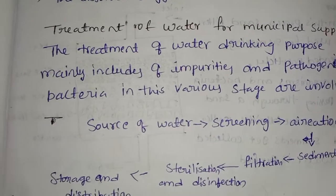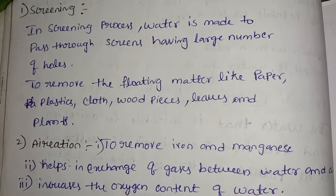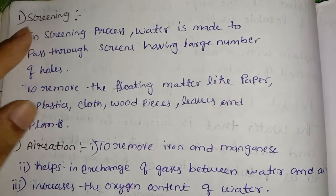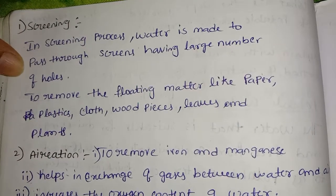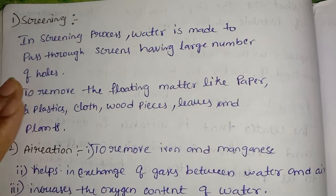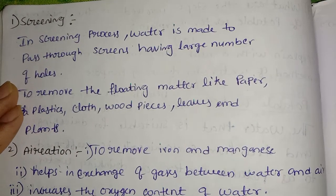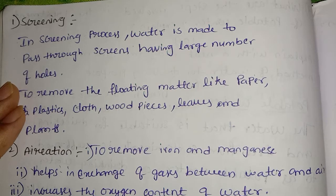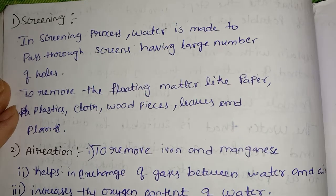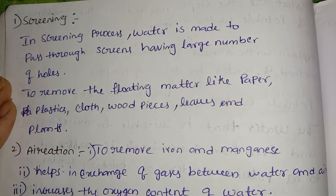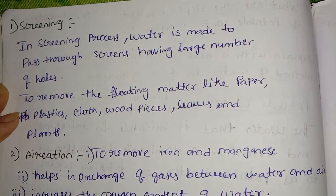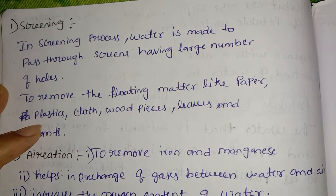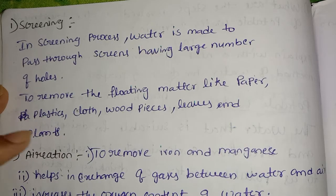Now let's begin. The first step is screening. In the screening process, water is made to pass through screens that have a large number of holes, to remove floating matter like papers, plastic, cloths, wood pieces, leaves and plants.